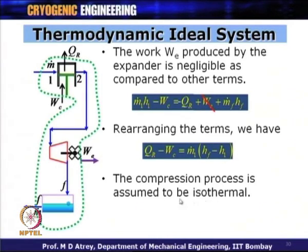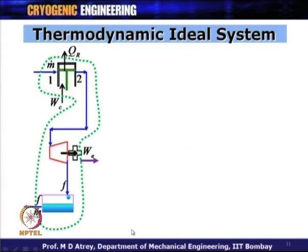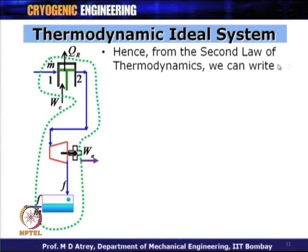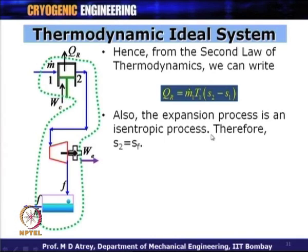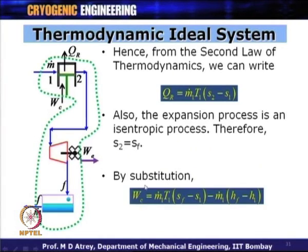From the second law, Q_R equals M_1 dot × T_1 × (S_2 − S_1) for the isothermal compression process. Since the expansion process is isentropic, S_2 equals S_F. Substituting, the work of compression W_C equals M_1 dot × [T_1(S_F − S_1) − (H_F − H_1)]. The entropy difference and enthalpy difference between point 1 and the final point are the most important parameters for calculating W_C.